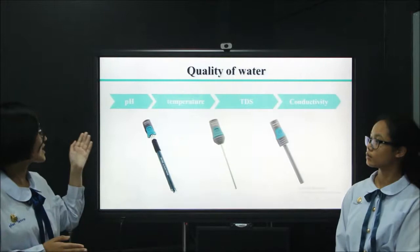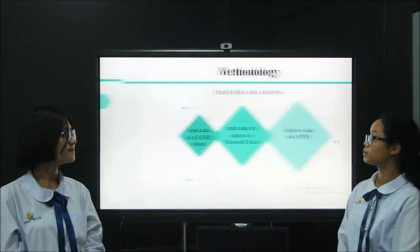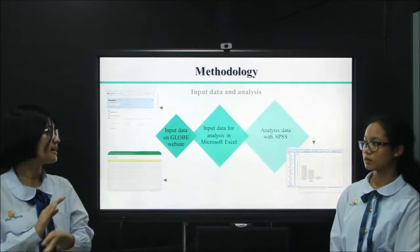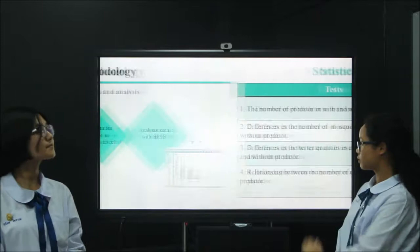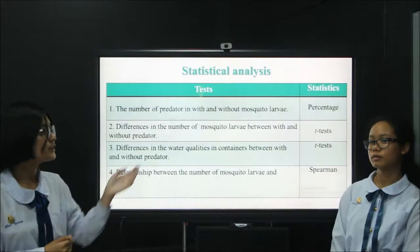We studied water qualities such as pH, temperature, TDS, and conductivity. After inputting the data on the GLOBE website, we entered the data into Microsoft Excel and analyzed it with SPSS. The statistical analyses we used for our project include percentage, t-test, and experiment.